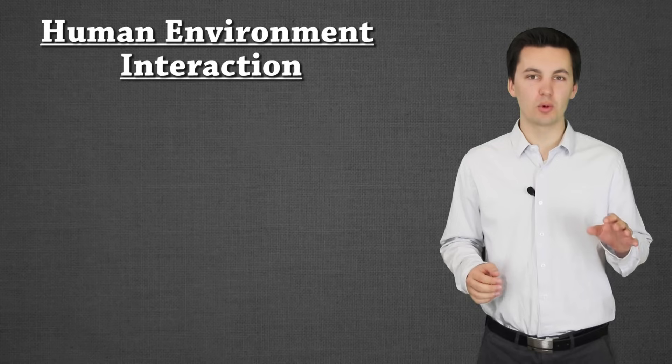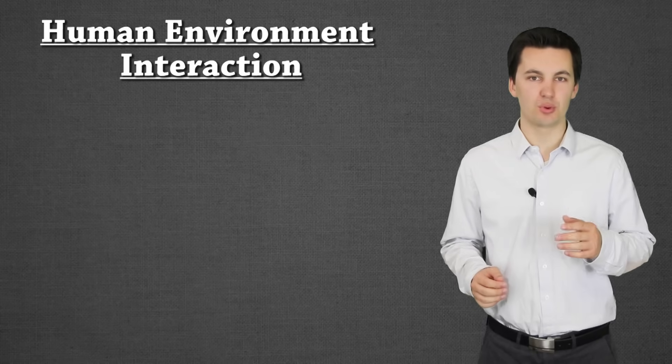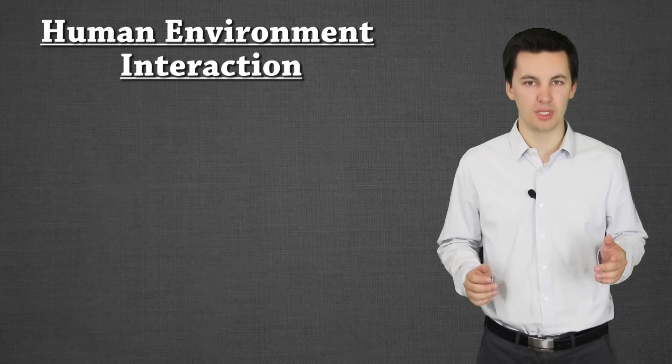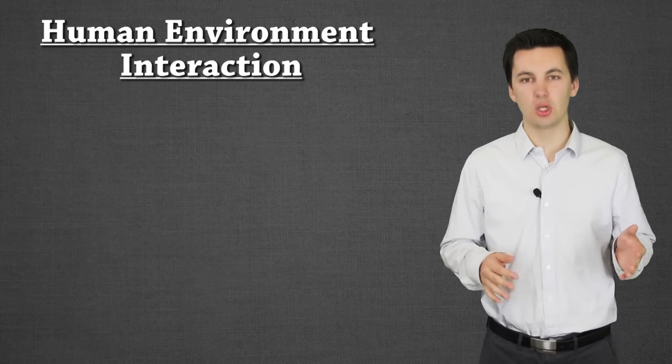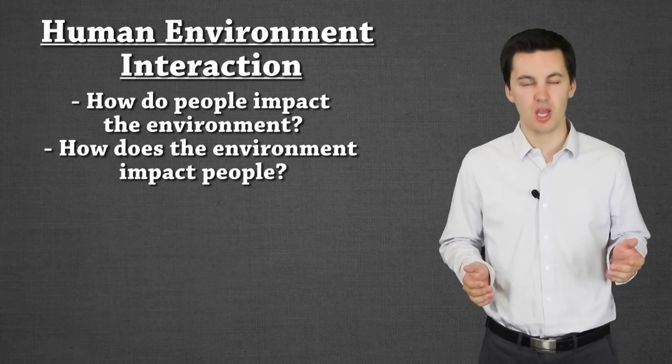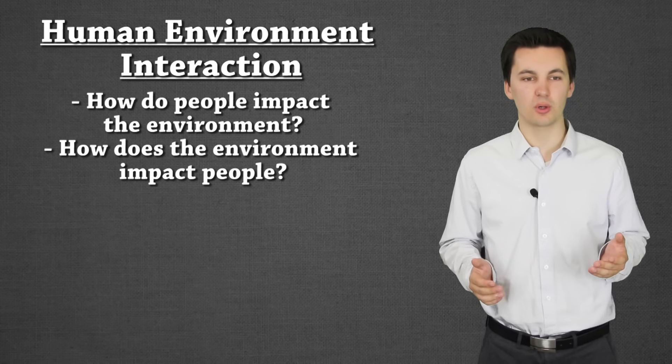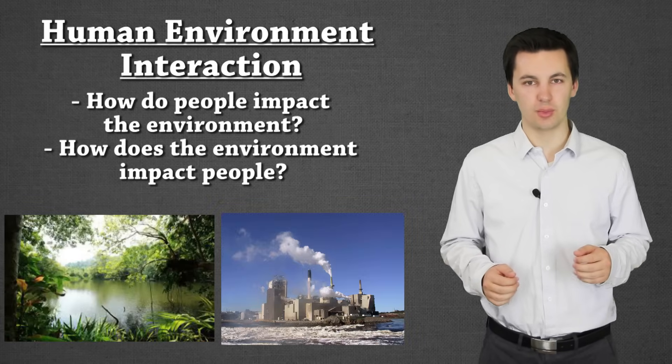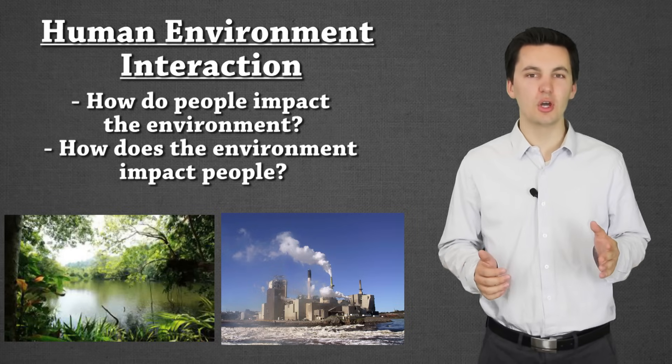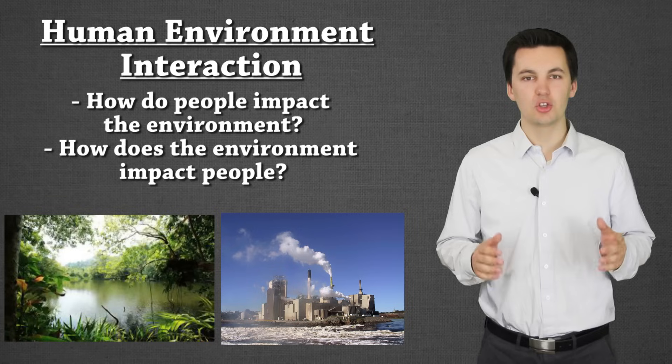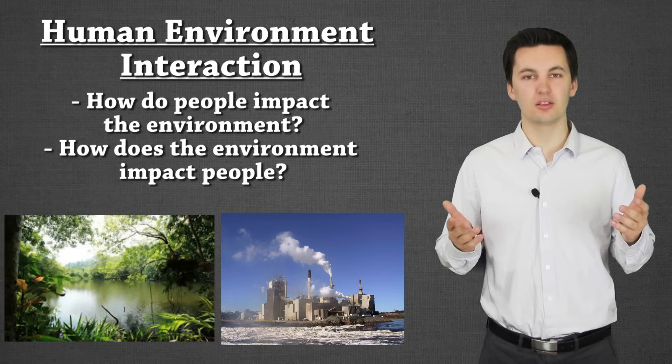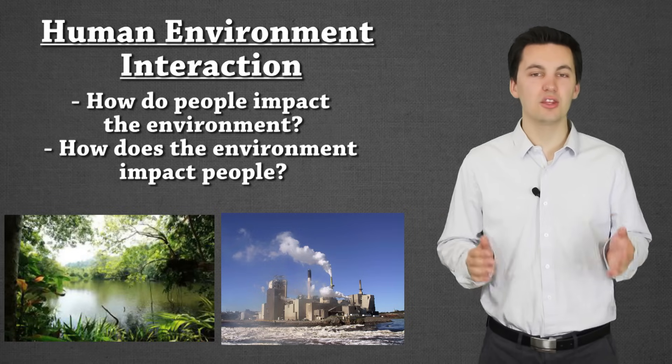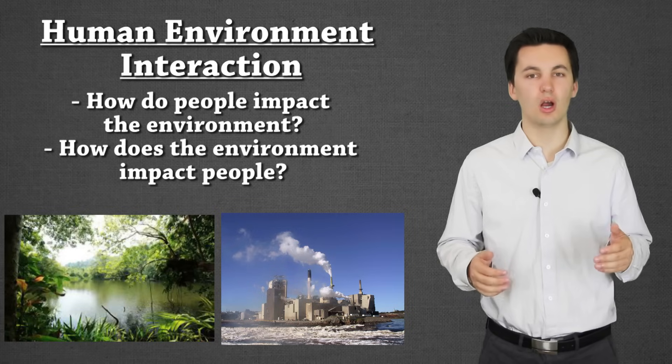Our next theme of the five themes of geography is human environment interaction. Now this one we're going to see continue to pop up throughout our course, especially when we get into environmental determinism. But human environment interaction looks at some simple questions. What is the relationship between humans and their environment? How have humans changed the environment? How do humans utilize their resources? What is the human impact on our environment? What's going on there? Now it's important to note that this is a relationship. It's a back and forth. Humans will continuously manipulate the environment that they live in to be able to better create lives for themselves and to just survive. And the environment will also have a reaction to our manipulation.